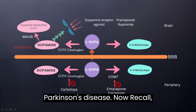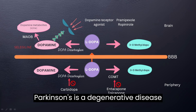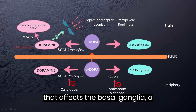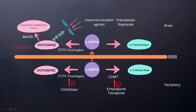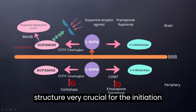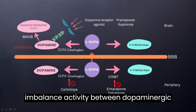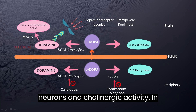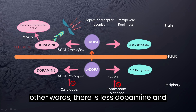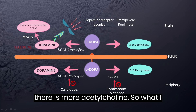Parkinson's is a degenerative disease that affects the basal ganglia. This structure is very crucial for the initiation of movement. In Parkinson's, there is an imbalance of activity between dopaminergic neurons and cholinergic activity. In other words, there is less dopamine and there is more acetylcholine.